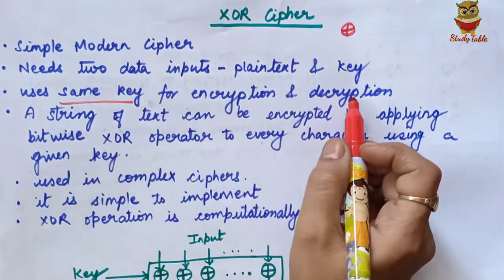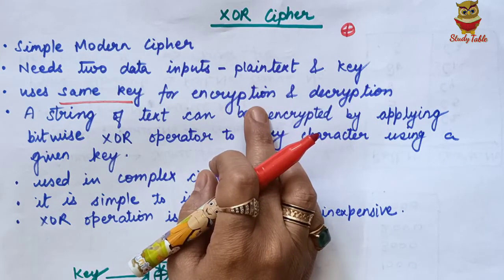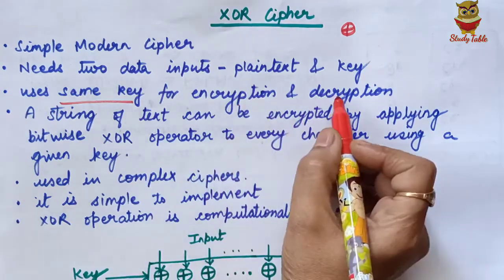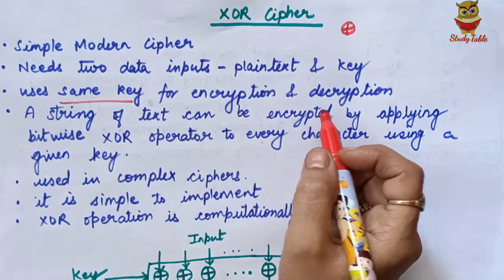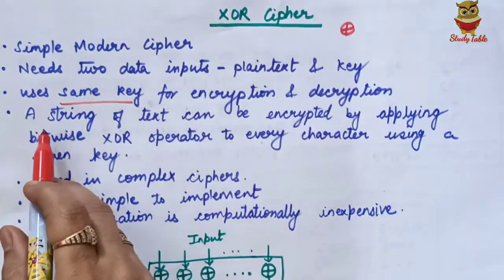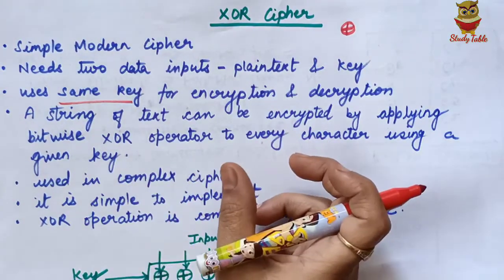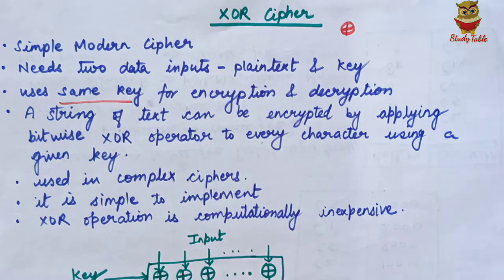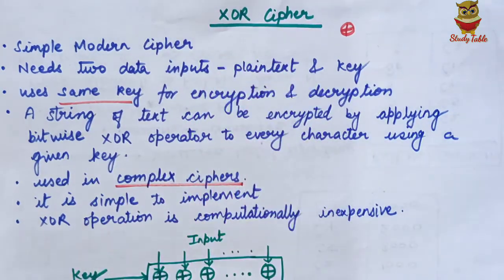XOR cipher uses the same key for encryption and decryption, which means it is symmetric key cryptography. As discussed in previous videos, modern ciphers include XOR cipher. XOR cipher is not used alone — it is used as a small part within larger, complex modern ciphers.